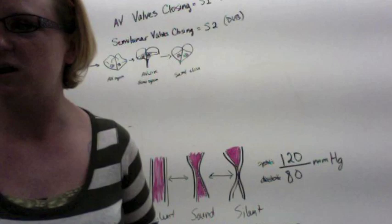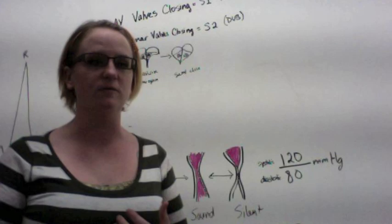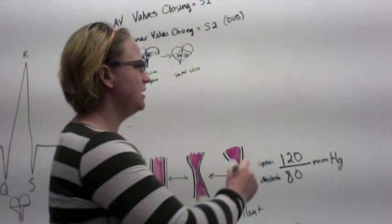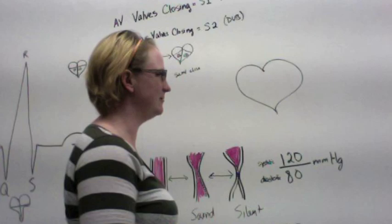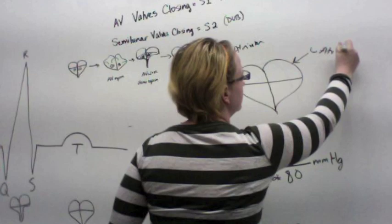Now let's talk about stuff with the heart, like repolarization. First on your list, you have heart sounds. Heart sounds — usually what you're listening for is valve functionality. When we learned about valves, there are two different types. Here's a big drawing of a heart. You have your septum in between, and then your chambers: right atrium, left atrium, right ventricle, and left ventricle.